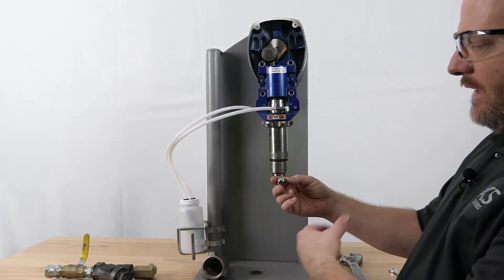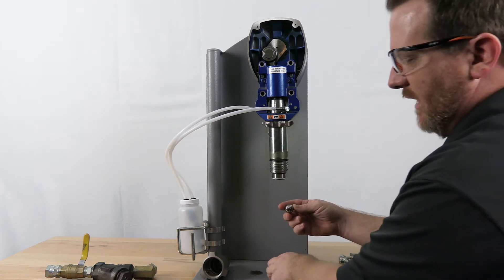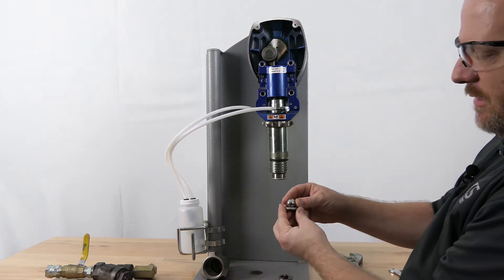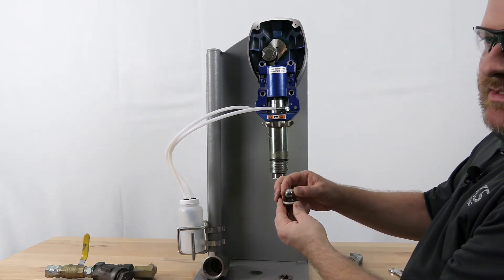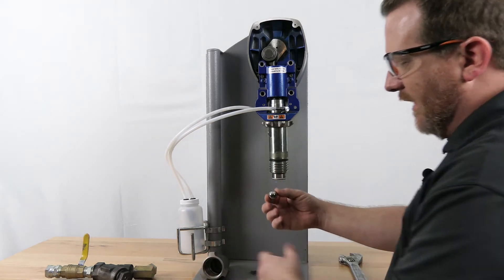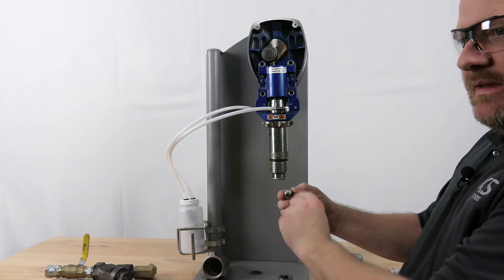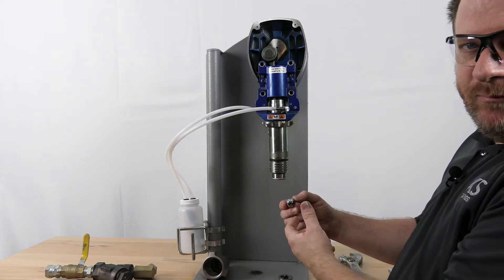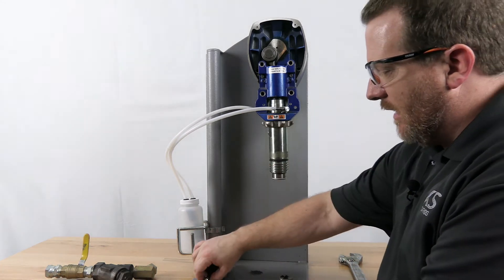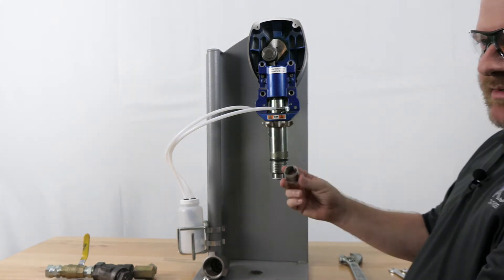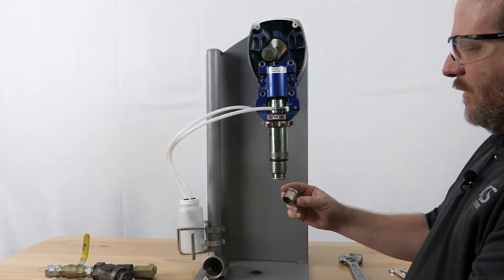You also want to check the check ball itself. Make sure there's no debris, nothing stuck to it, and there's not a ring worn in it. Sometimes we see where this thing goes up and down and chatters against that piece for five or ten years. It'll wear a ring in that, and then it moves a little bit and that ring will let fluid leak.